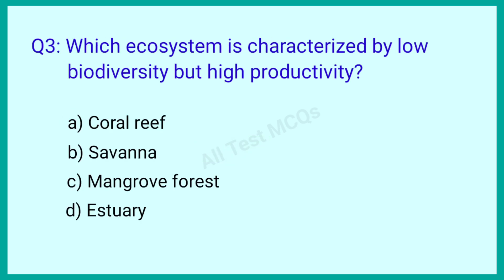Question number 3: Which ecosystem is characterized by low biodiversity but high productivity? The correct answer is option B: Savannah.